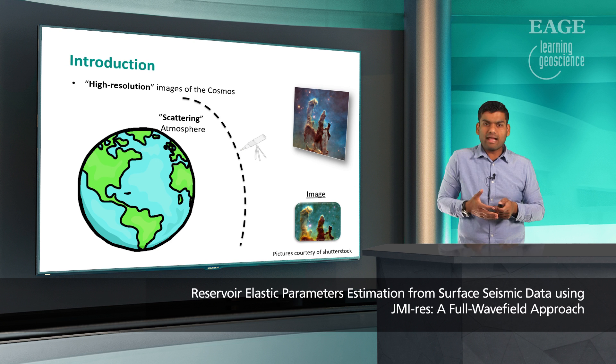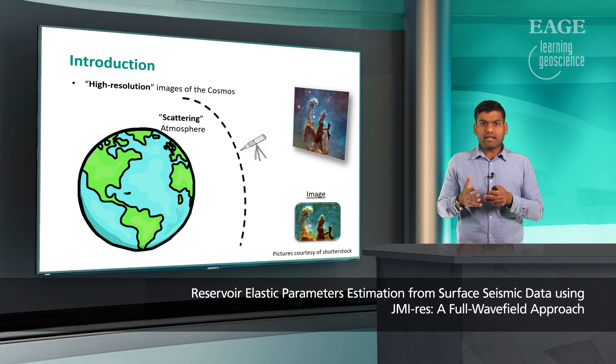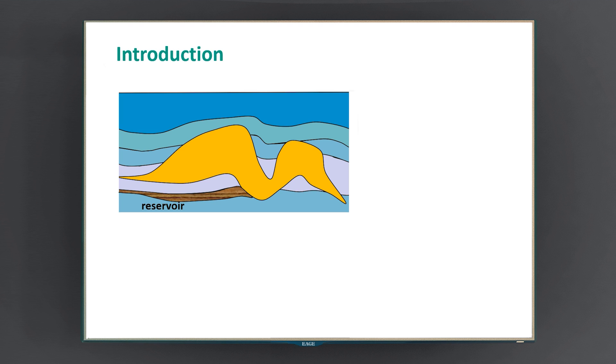However, over the years, astronomers have sent their recording devices — in this case telescopes — above the scattering atmosphere and avoided it. By doing so, they are able to get much higher resolution images of the cosmos.